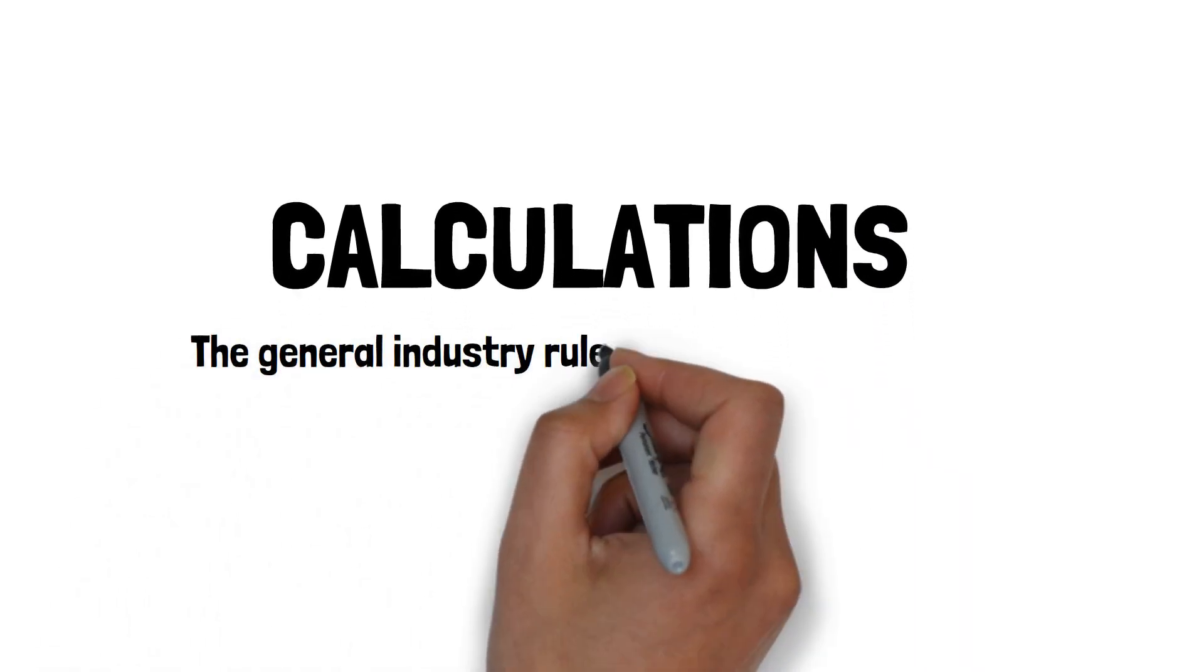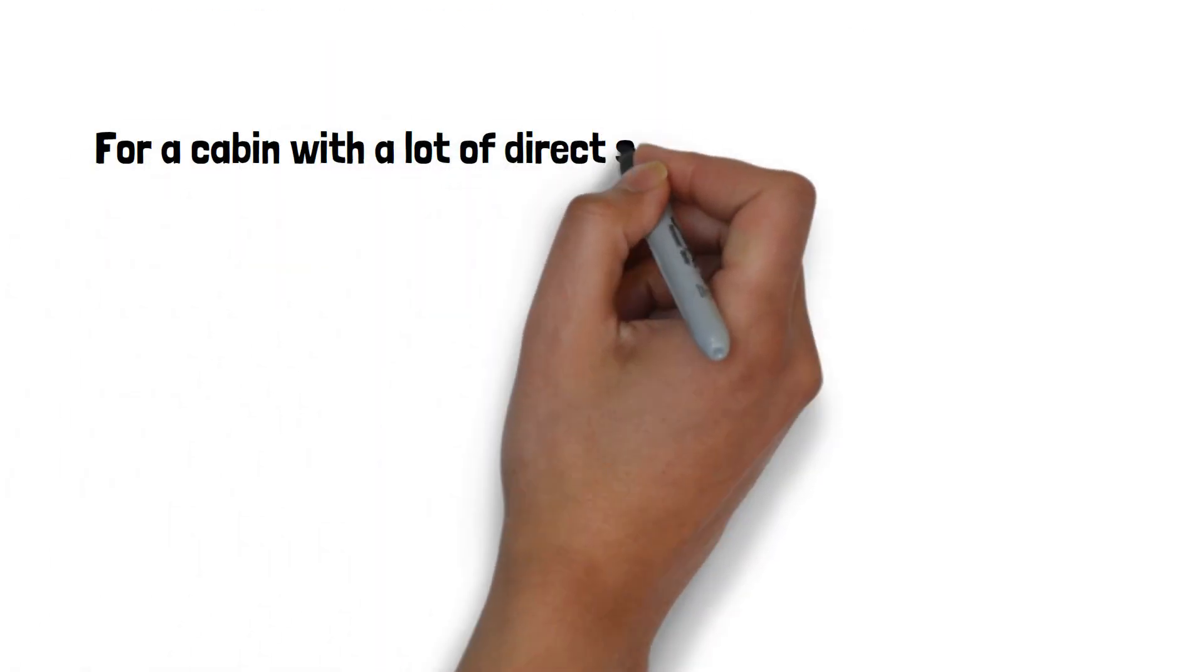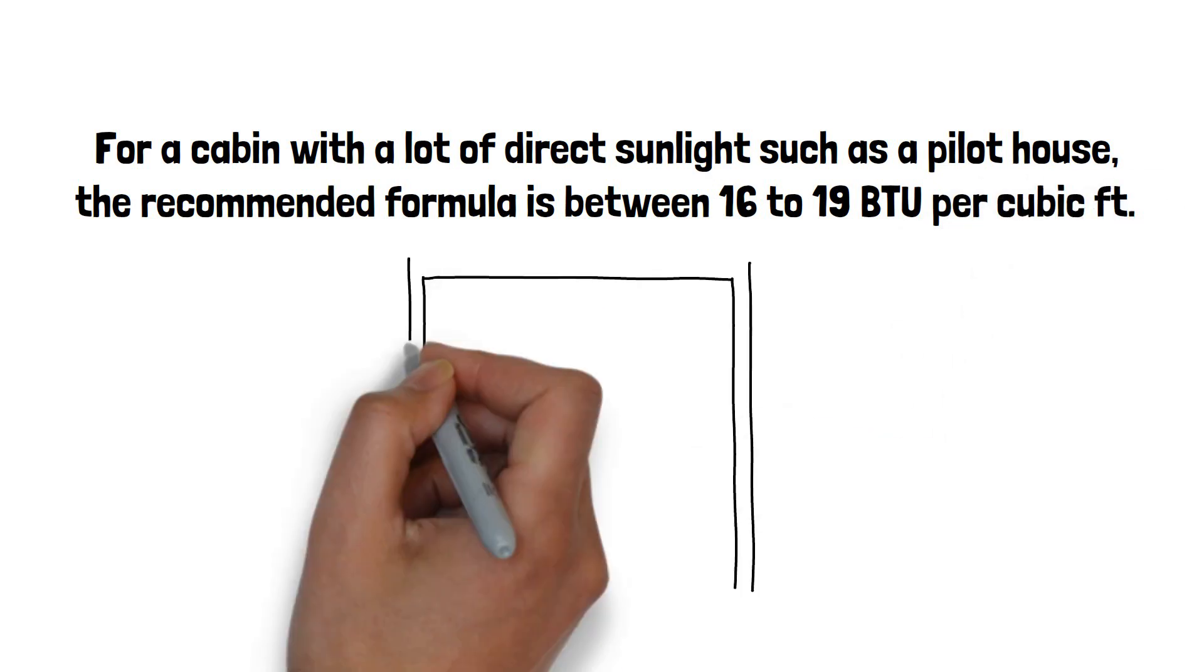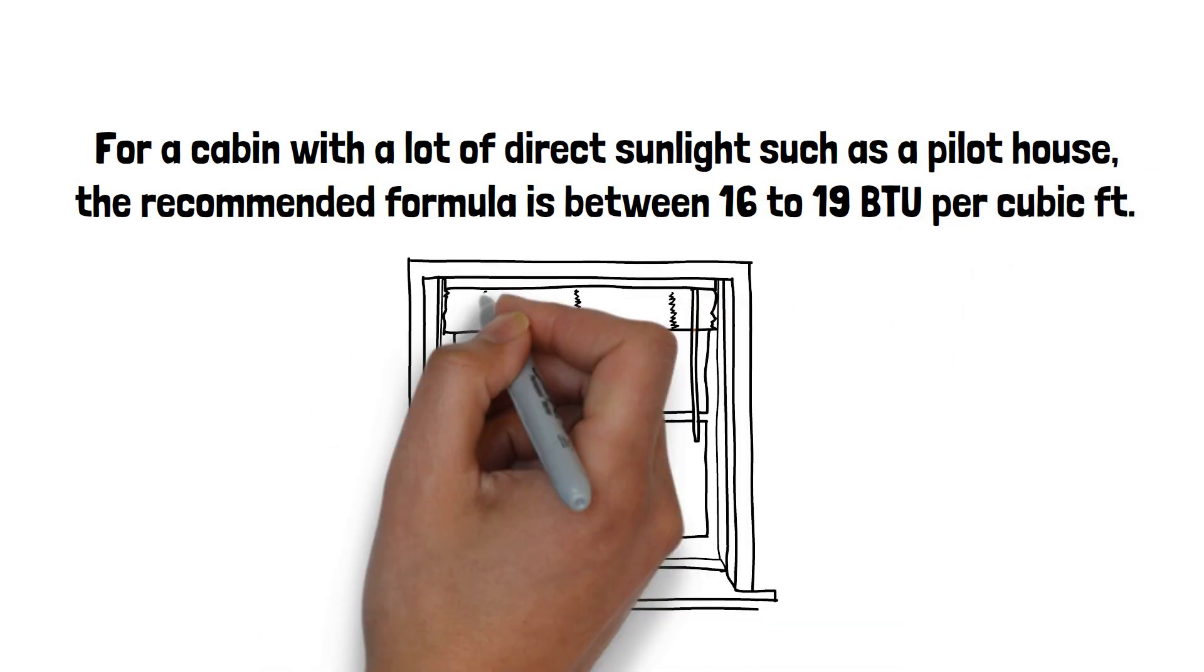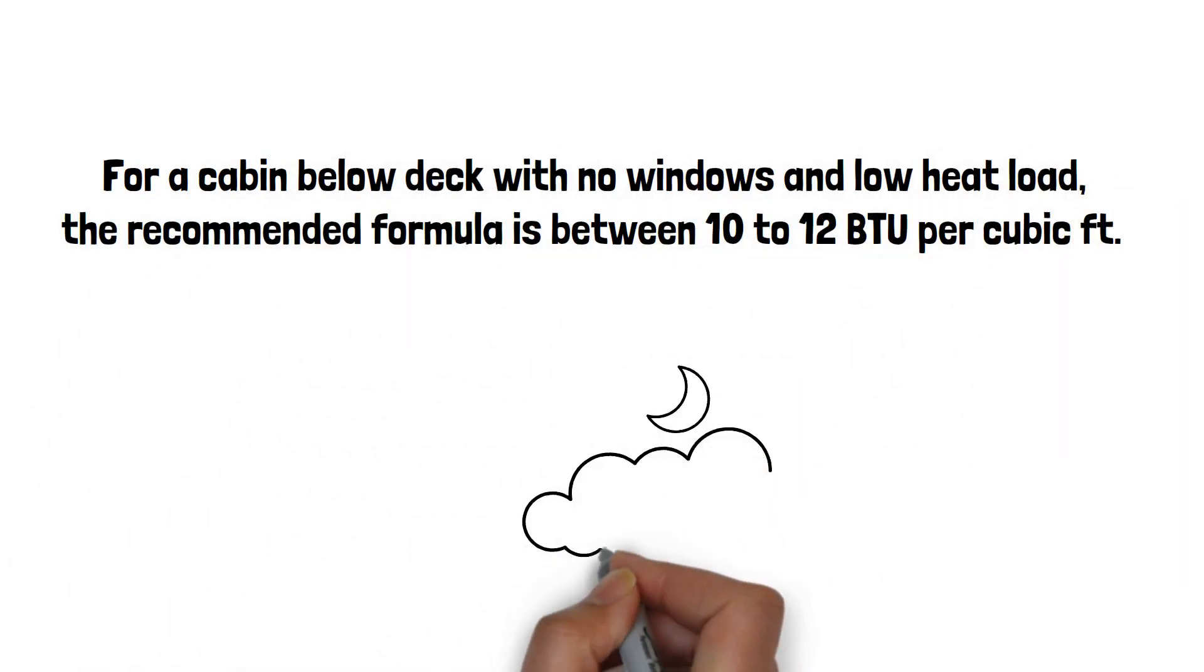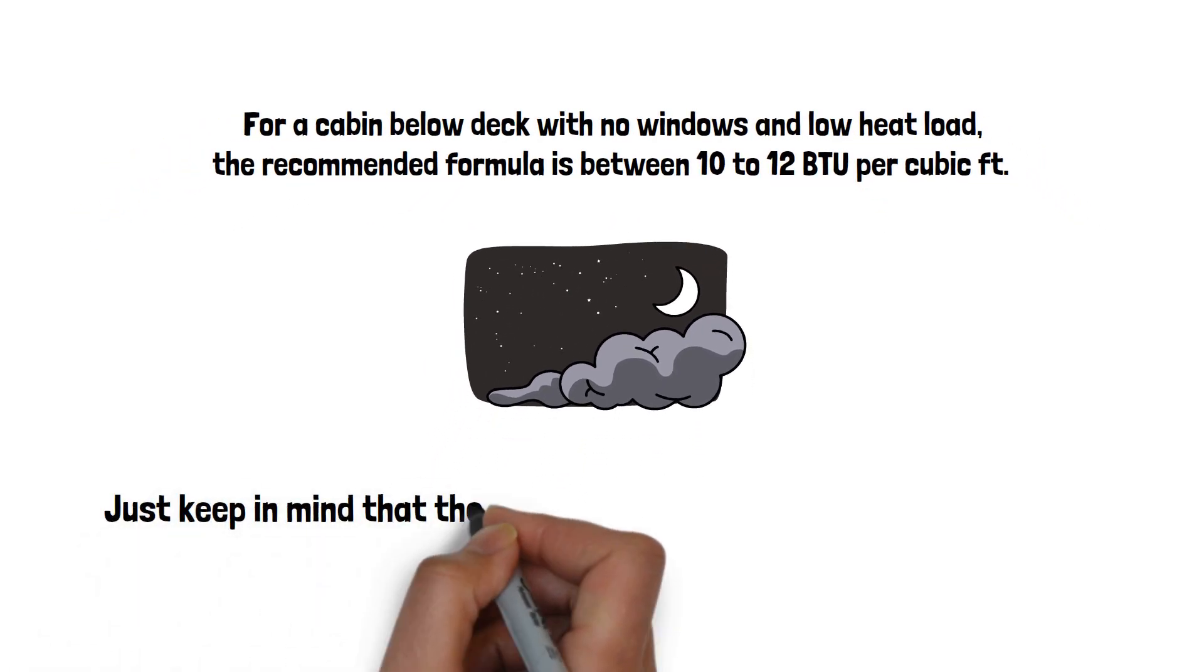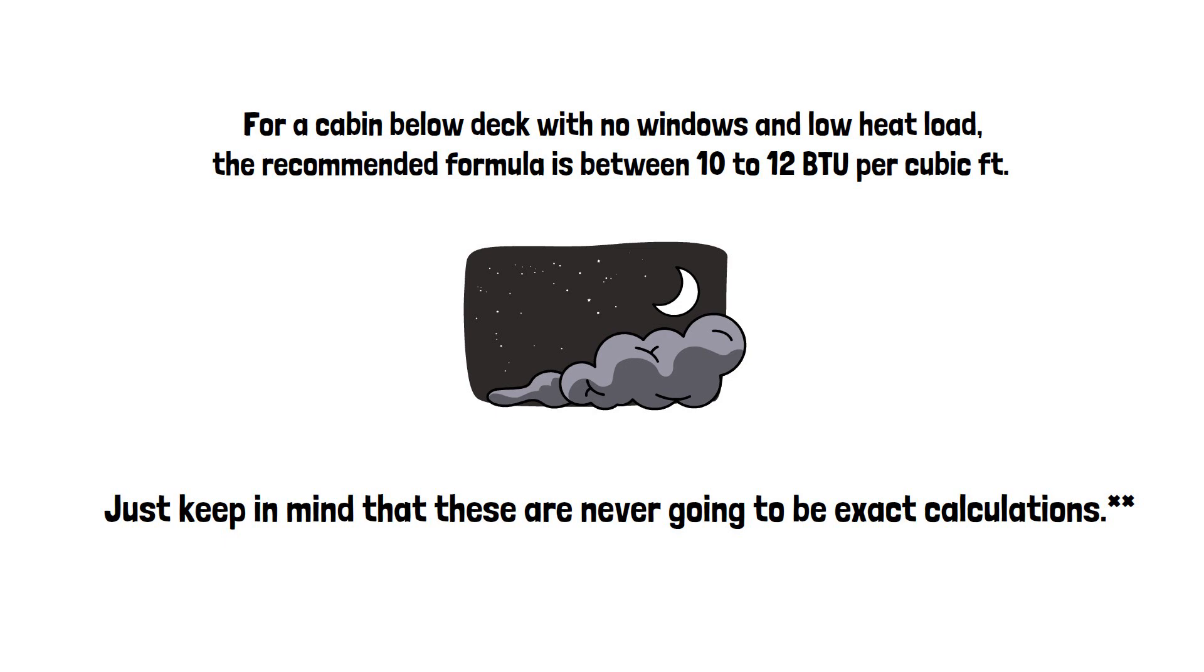Calculations. The general industry rule for sizing an air conditioner is 14 BTU per cubic foot. For a cabin with a lot of direct sunlight such as a pilot house, the recommended formula is between 16 to 19 BTU per cubic foot. For a cabin below deck with no windows and low heat load, the recommended formula is between 10 to 12 BTU per cubic foot. You can use these formulas to determine BTU for your cabin space. Just note that these numbers are usually a generalization and may not be sufficient during the hottest of days. Alternatively, they can also cause oversizing during the coldest of days.